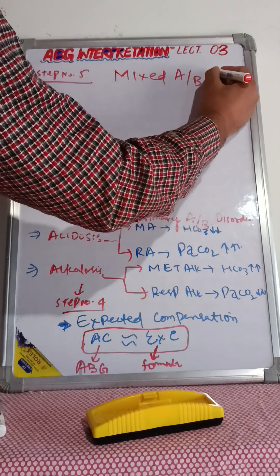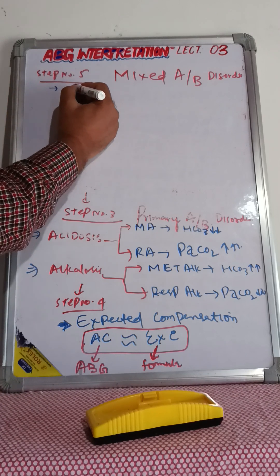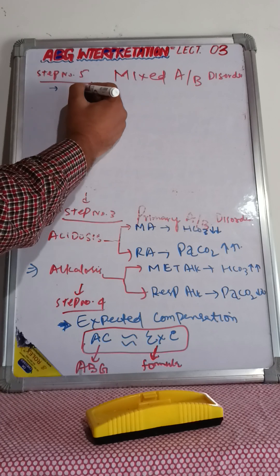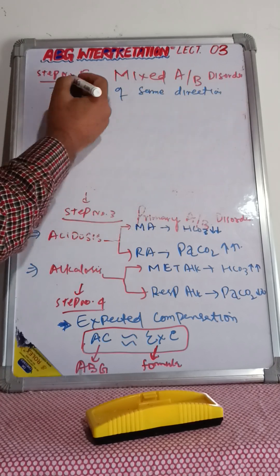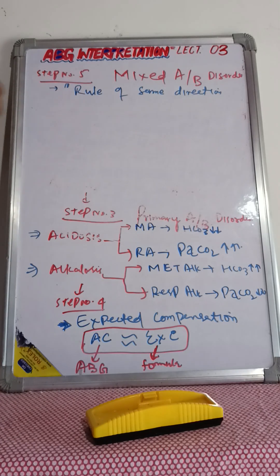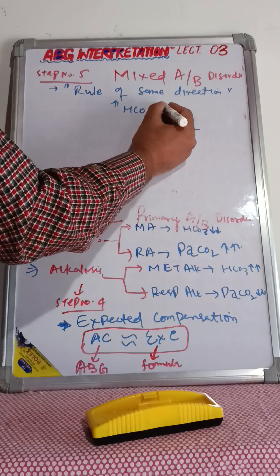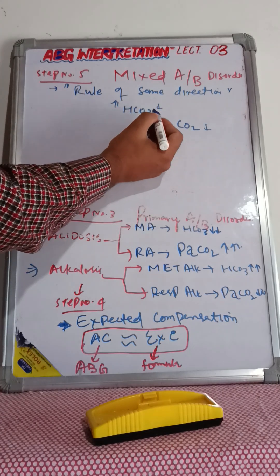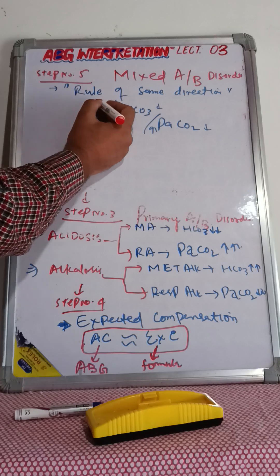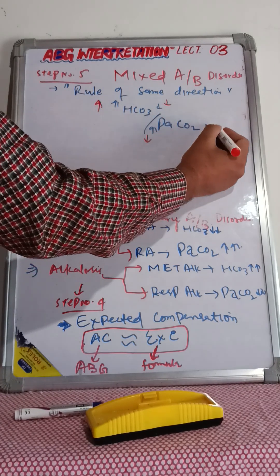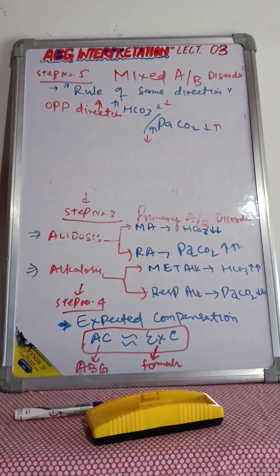In step number five, there are two things to remember. First, check whether the change is in the same direction — the rule of same direction. There are two parameters: HCO3 and PaCO2. If bicarbonate increases, PaCO2 must also increase; if PaCO2 decreases, bicarbonate must also decrease. If they are in the same direction, it is a primary disorder. If they are in opposite directions, that indicates a mixed disorder.